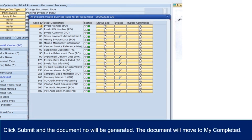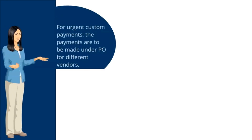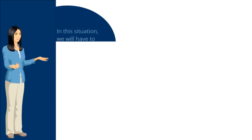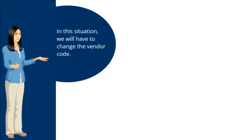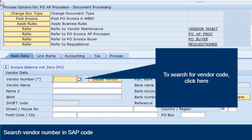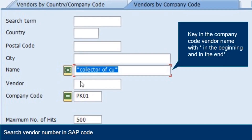The document will move to My Completed. For urgent custom payments, the payments are to be made under PO for different vendors. In this situation, we will have to change the vendor code. To search for vendor code, click here. Key in the company code and vendor name with star in the beginning and in the end.